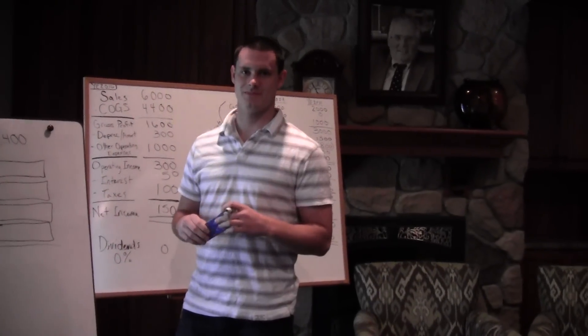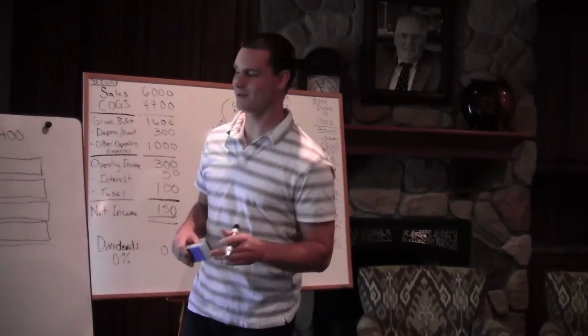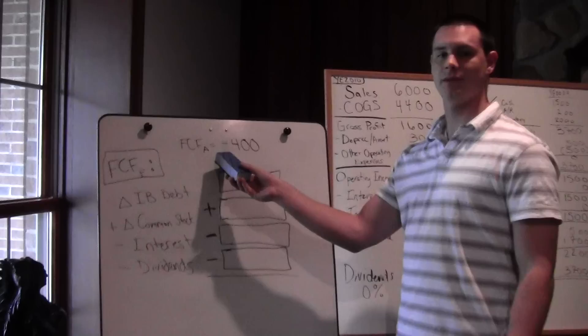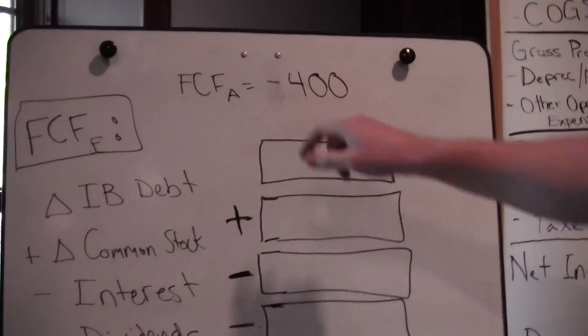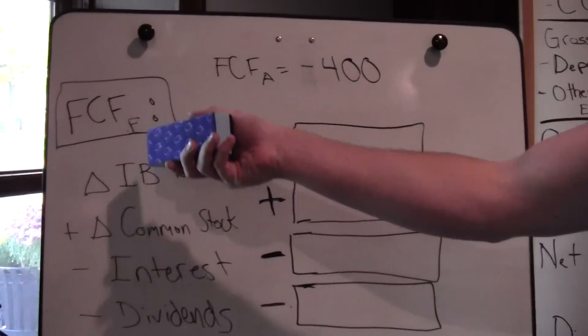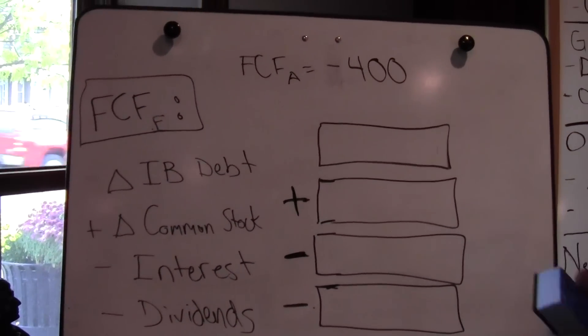Let's hear more about free cash flow from a financing perspective. As you may remember, our free cash flow from an assets perspective is negative $400. So we know that our free cash flow from the financing side is going to be $400 because it's the reverse sign.